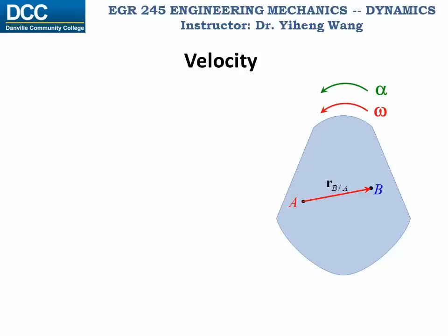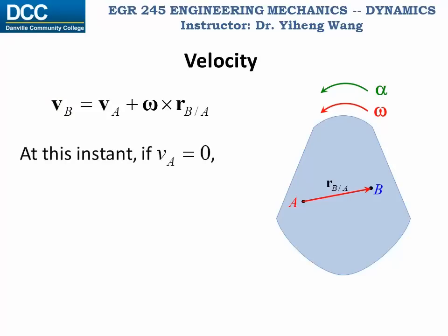Once again, for a rigid body undergoing general plane motion, for any two points A and B that belong to this rigid body, we can write this equation that relates their linear velocities. According to this equation, if at this instant V_A is zero, then this equation becomes simply V_B equals the cross product of omega — the angular velocity vector of this rigid body — and R_B/A, which is the relative position vector with respect to point A.